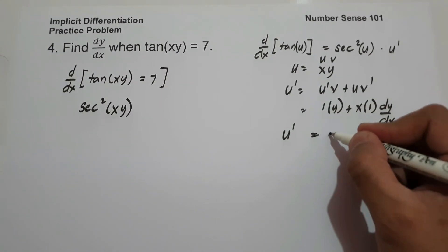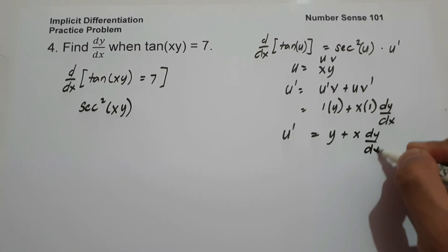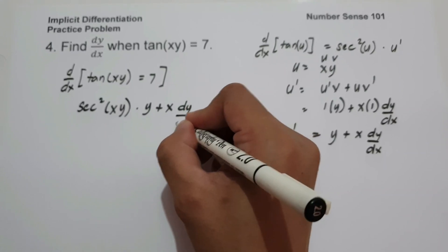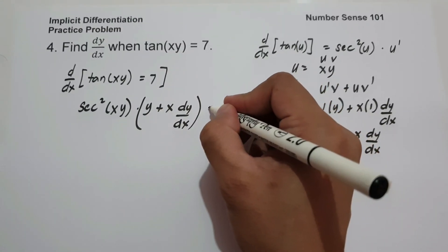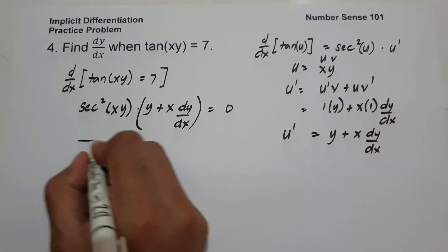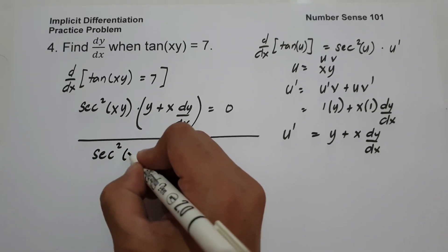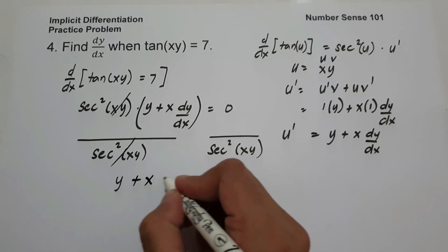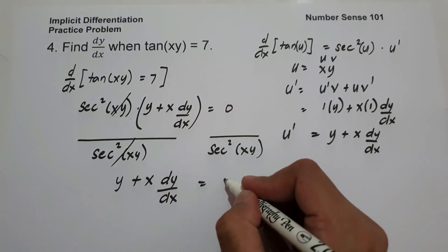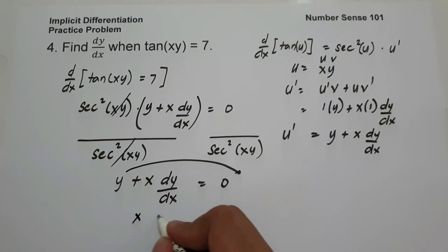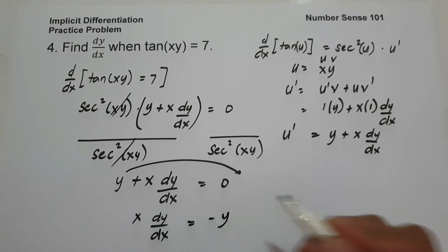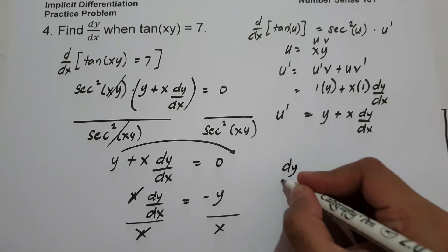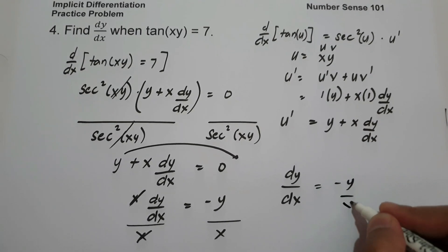So we multiply sec squared(xy) by (y plus x dy over dx), and the derivative of 7 is 0. Then divide the whole equation by sec squared(xy). That cancels, leaving y plus x dy over dx equals 0. Let us move y to the other side: x dy over dx equals negative y. Then divide both sides by x. So the value of dy over dx is negative y over x. And this will be our answer.